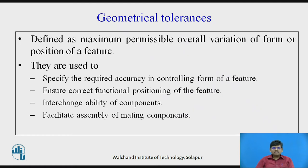Geometrical tolerances are defined as the maximum permissible overall variation of a form, or the position of a feature. Position of a feature means, for example, if you have two concentric circles, to what extent the concentricity might differ — that is the possible position of the feature.